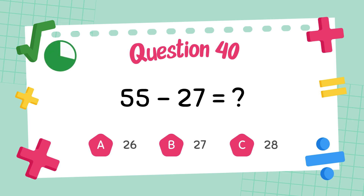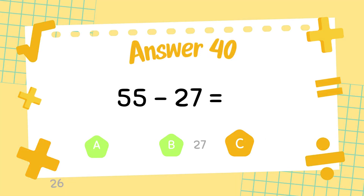What is fifty-five minus twenty-seven? The answer is twenty-eight.